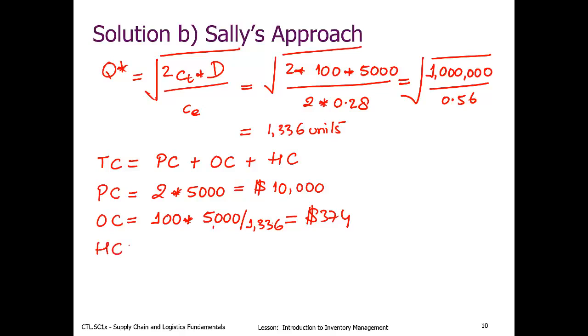What about the holding cost? Will this be affected with the new EOQ? Yes. And the formula is CE, or cost of excess inventory, times the average inventory on hand. So we have done this before. We have calculated CE to be 0.56. The average inventory on hand, however, is Q by 2, and this time our Q is 1,336 divided by 2, and this again gives us coincidentally a value of $374.